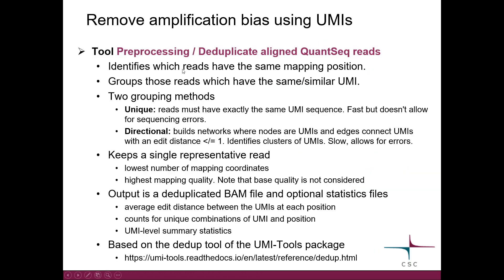After the alignment, we need to identify which reads have the same mapping position and group those reads which also have the same or similar UMI together. You can either require the UMI to be exactly the same using the grouping method 'unique', which is fast but doesn't allow for sequencing errors in the UMI. The 'directional' method allows for errors but is a bit slower because it clusters UMIs. We then keep a single representative read for each UMI cluster — the one with the lowest number of mapping coordinates and highest mapping quality. Note that base quality is not considered.